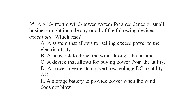A grid intertie wind power system for a residence or small business might include any or all of the following devices except one. Which one? Well, you will never find a penstock in a wind power system of any kind. So the correct choice is B.